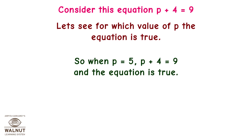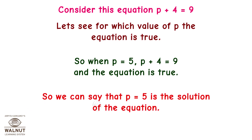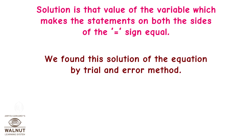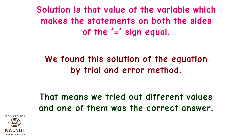So when p is equal to 5, p plus 4 equals 9 and the equation is true. We can say that p equals 5 is the solution of the equation. Solution is that value of the variable which makes the statements on both sides of the equal sign equal. We found this solution by trial and error method — we tried different values and one of them was the correct answer.